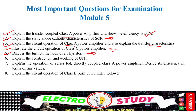Explain the construction and working of the Unijunction Transistor (UJT), including the mathematical expressions. You need to calculate resistance values — Rbb in particular. For that specific diagram, you need to apply the voltage division formula and compute the voltage across the particular junction.